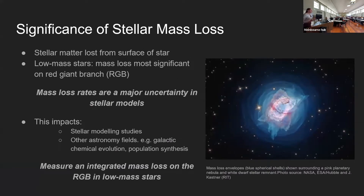I wanted to start by discussing the significance of stellar mass loss. Stellar mass loss is the process where stellar matter is transported away from the surface of a star, and this happens throughout the entirety of the star's lifetime. For low mass stars, mass loss is most significant on the red giant branch, and this has impacts on the subsequent evolutionary phases and also on the final stellar remnant.